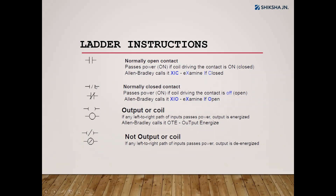Normally closed contact is the total opposite — it is already closed, and when you press it, it will disconnect the line. That is the difference between normally open and normally closed. The normally closed contact symbol has two lines on the side with one inclined line, or two intersecting lines. These represent similar things across different PLCs. The last symbol is the output coil, shown with open and closed brackets, representing all digital field instruments like motors, pumps, and solenoid valves — any digital on/off device.